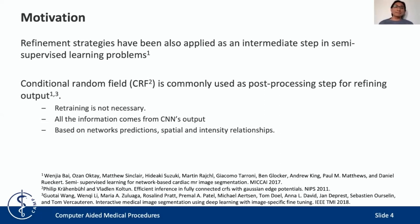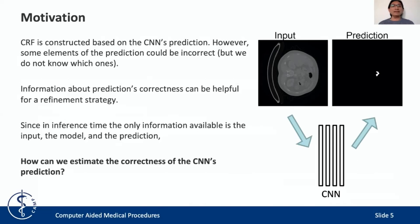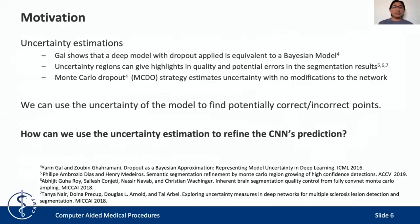A question we could ask here is what additional information could be useful for refining segmentation. We know that some elements of the prediction could be incorrect, but we don't know which elements are actually incorrect. If we can have an estimation of which elements are potentially incorrect or potentially correct, we can include this information in the refinement process. To estimate the correctness of the CNN's predictions, we can use uncertainty estimation methods, for example the Monte Carlo Dropout strategy, which can be applied to any convolutional neural network without changing the architecture and without retraining the network.